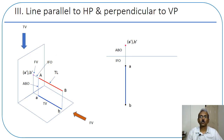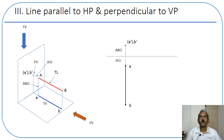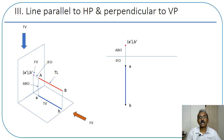Here you can see the line is parallel to the horizontal plane and perpendicular to the vertical plane. Looking at the diagram on the left, the actual line is shown in red color, denoted by capital letters A and B. The line is a certain distance above the horizontal plane and end A is at a certain distance in front of the vertical plane. Because the line is parallel to the horizontal plane, the top view will give you the true length.